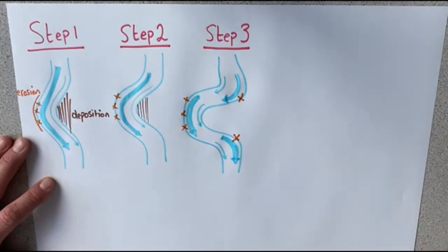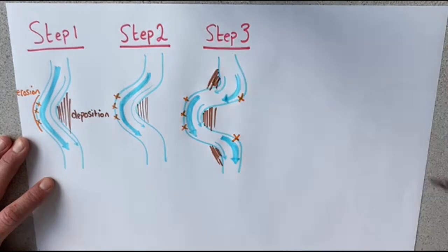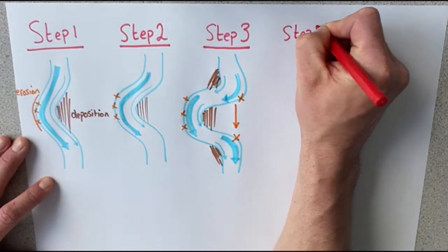So here we will have still the erosion, and then we start to get erosion taking place at the neck of the meander where eventually, where that arrow is, the river will cut through.